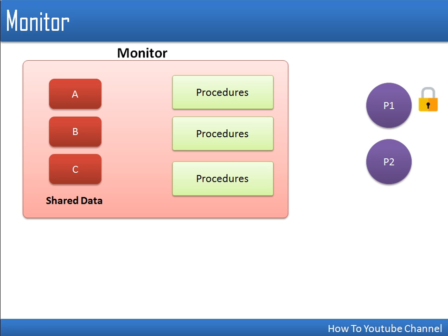Monitor is actually a module. This module contains the data which are going to be shared among processes, and it also has some procedures. If a process wants to access some data, they cannot access it directly — they need to call procedures, and those procedures in turn will allow access to data. With monitor, only one process can enter the monitor, because a lock is associated with every monitor.